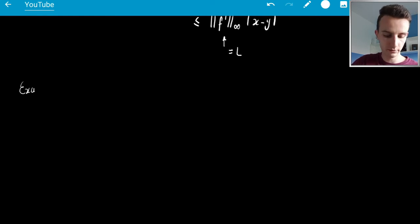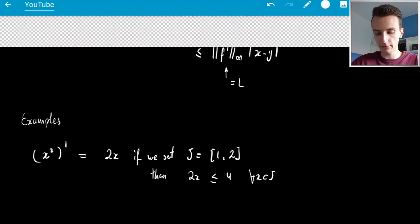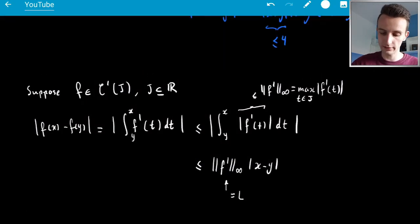like, now let's look at examples again. So whenever I give you a C1 function, like, for example, we had x squared, right, you immediately know that this is Lipschitz continuous because it's C1, right. So you know that its derivative, its derivative is 2x, and so on the interval, if we set J equal to the interval [1, 2], then 2x is less than 4 for all X in J, and look at that,